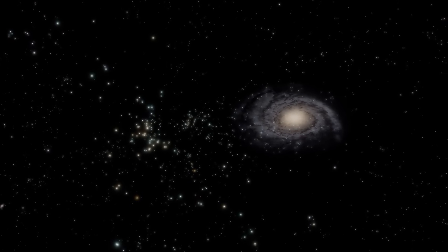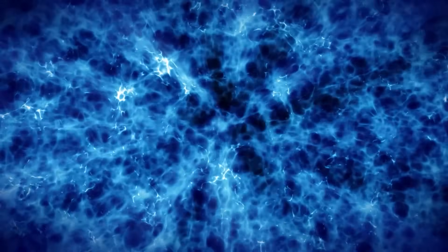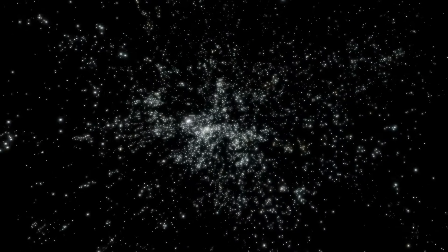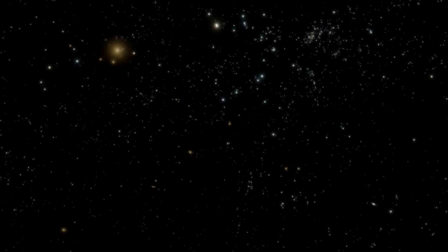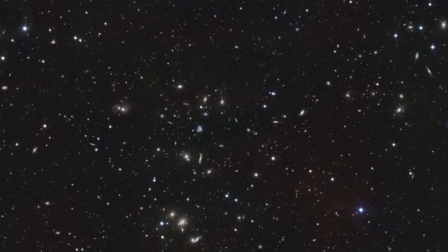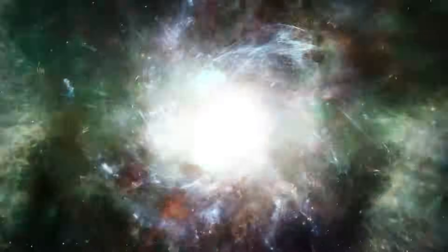Thus, there must be something else present – something that doesn't emit or reflect light – something dark. Although we can't directly observe dark matter, we can infer its presence through its gravitational effects. Regions with a high concentration of dark matter bend light passing nearby, indicating the presence of this unseen substance. The gravitational interaction serves as indirect evidence of dark matter's existence, despite our inability to directly perceive it.